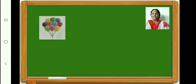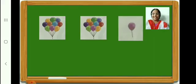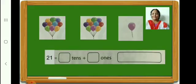Can you see a bunch of balloons on the screen, just like in your textbook? Count and see how many balloons are there in this bunch — ten. Now one more bunch of balloons: here also there are ten balloons. And here is one more balloon. Count and see in all how many balloons there are. Yes, there are 21 balloons. 21 is equal to 2 tens plus 1 one.